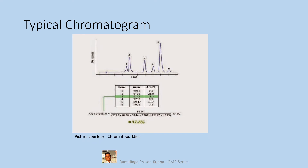See this typical chromatogram. Area counts of each peak divided by total of peak areas will give you concentration of the peak in percentage. In this example, the peak 3 area is 5144 and the total of peak areas is 29,814, giving 17.3% after proper rounding off. You can try with other peaks also and get the same results as indicated in the table. Now add up all percentages, you get 100%.